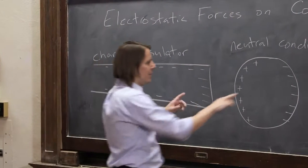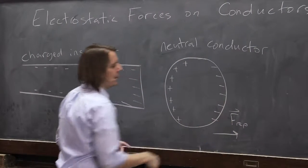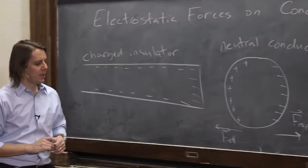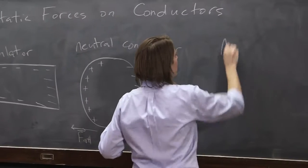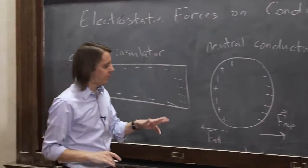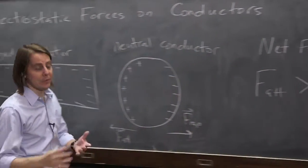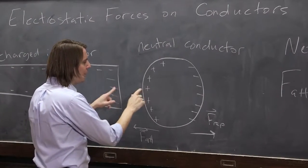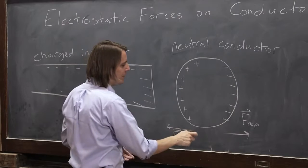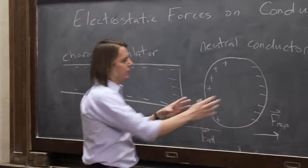Now if we want to think about the forces: these charges will feel a repulsive force here, and these positive charges will feel an attractive force on this side. The question is, what is the net force? We're not going to calculate it numerically, but we can realize that the force of attraction is greater than the force of repulsion. The reason is that the attractive side is closer. Coulomb's law depends on the two charge quantities divided by the separation squared, and this side has a smaller separation, so the force is bigger. The repulsive side is farther away, so it's a smaller force. So the conductor is attracted to the Teflon rod.